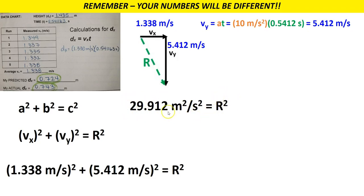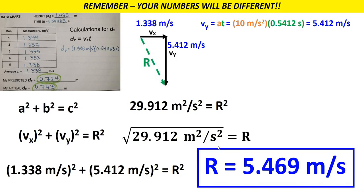Now some of you may leave it like this, but you're not finished. That's not your answer. In order to get rid of this squared, remember you have to square root. The opposite of squared is a square root. So you plug that in, square root of 29.912 meters squared per second squared. And finally, this is my resultant velocity, 5.469 meters per second.